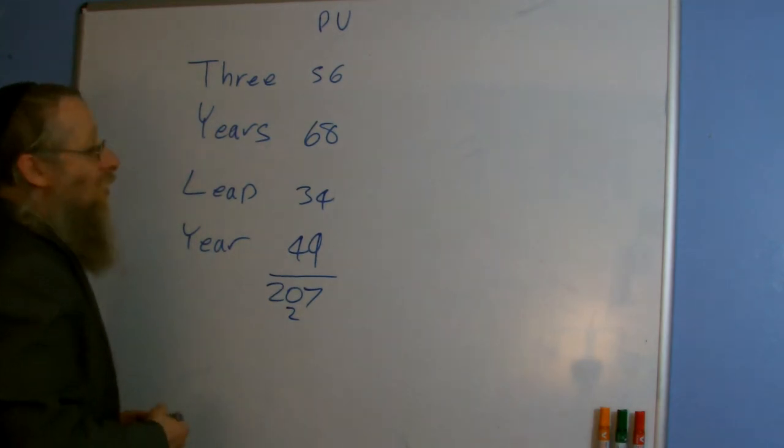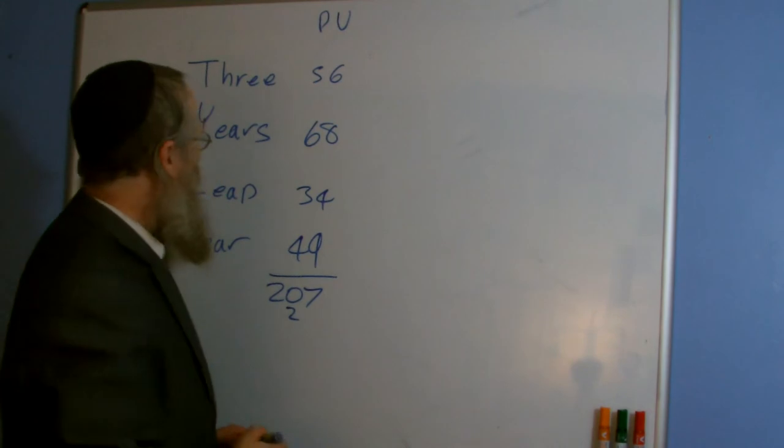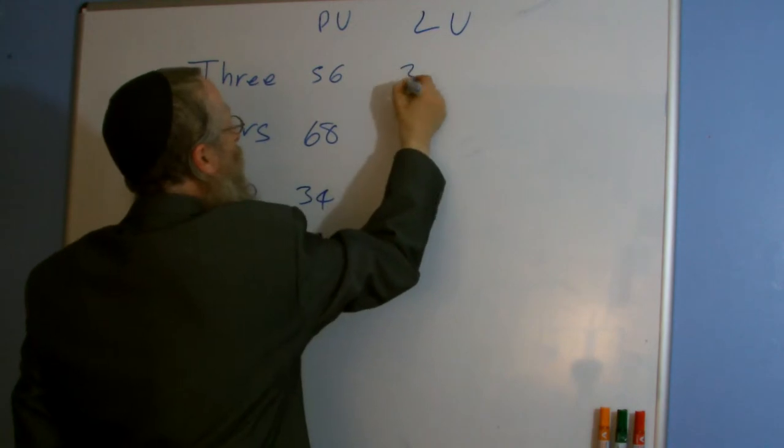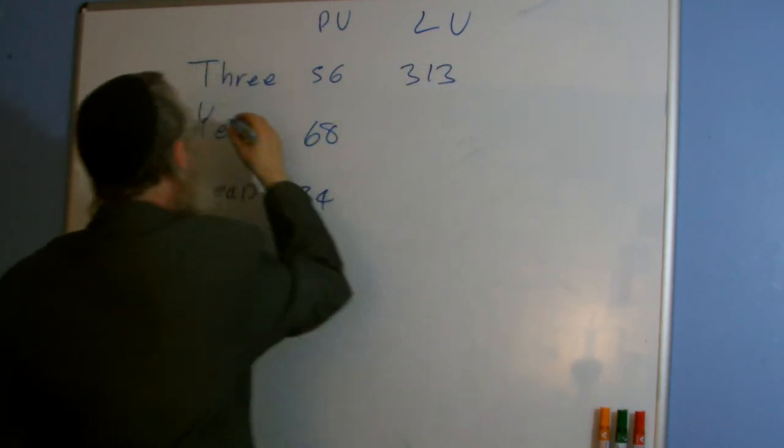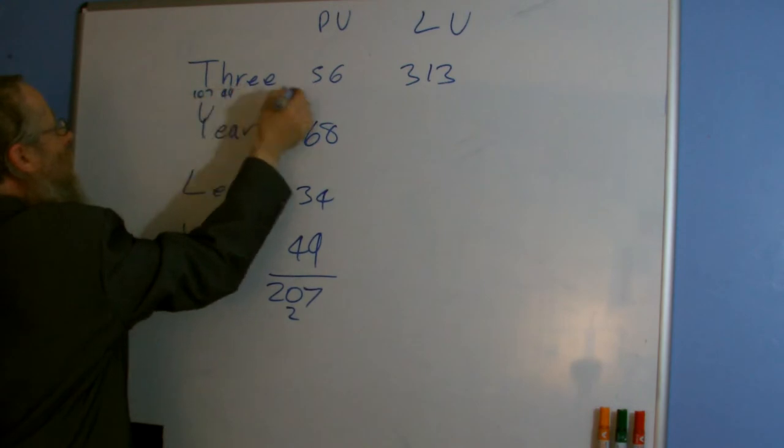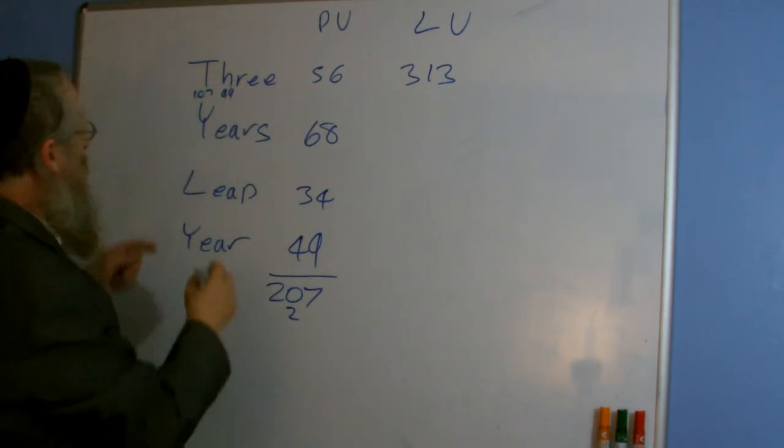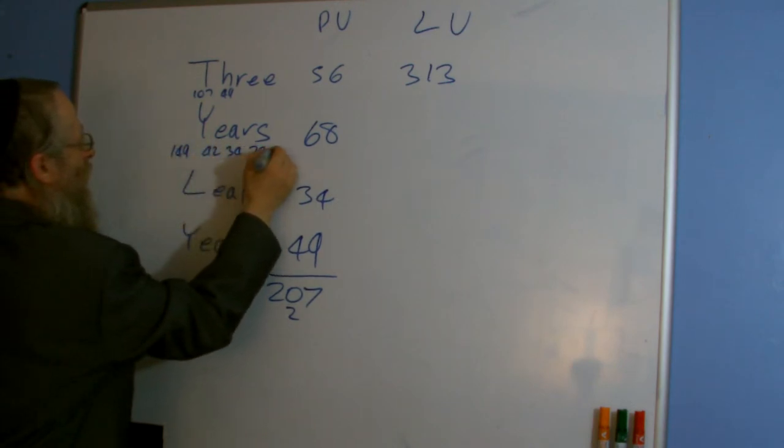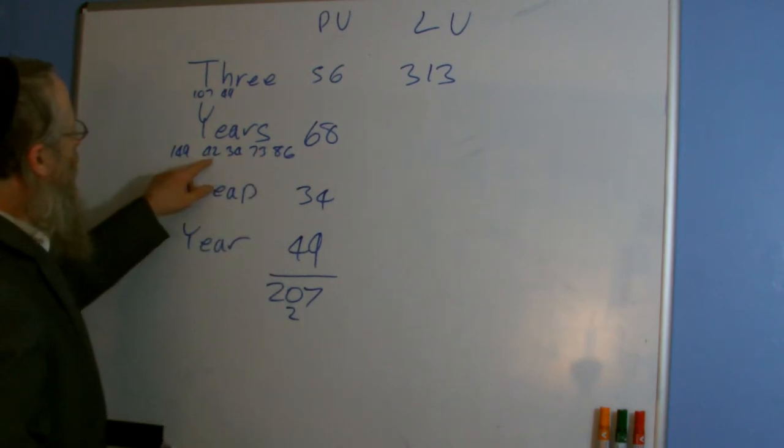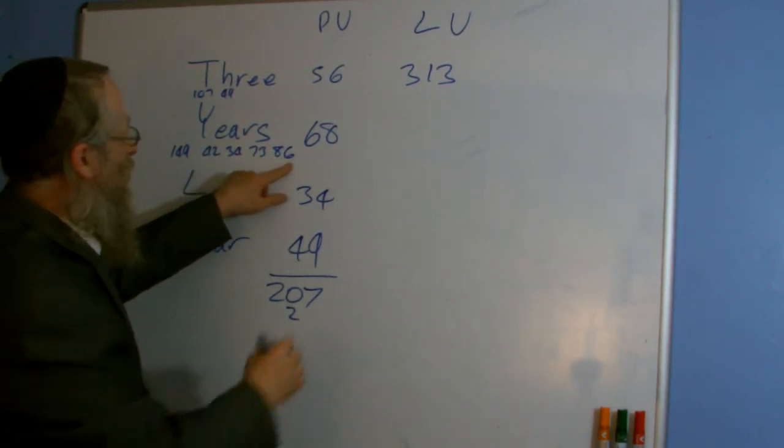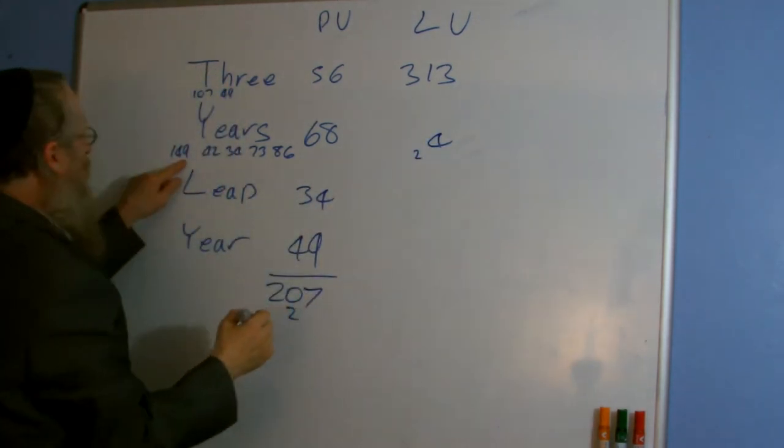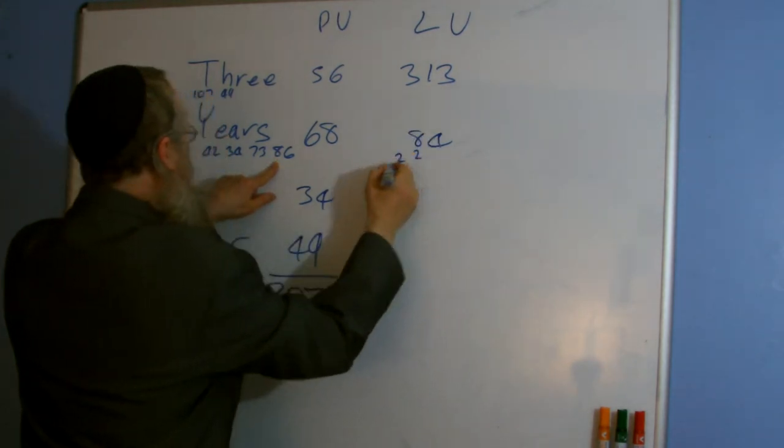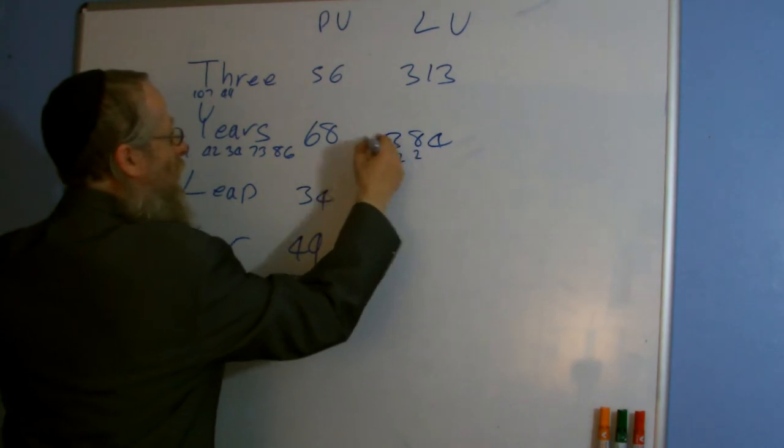If we now go to the large values, I know three is 313 and that's 107, 49, etc. Years, we've got 149, 42, 34, 73 and 86. I'll just do that quickly. 9, 11, 15, 18, 24, 4, 8, 11, 18, 26, 28 and 1 and 2 is 3. 384.